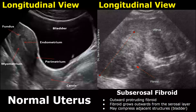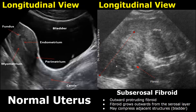Here is another image of a large subserosal fibroid. It has mixed echogenicity with some hypoechoic and hyperechoic areas, and it is growing outwards from the uterine wall. So this is a subserosal fibroid.